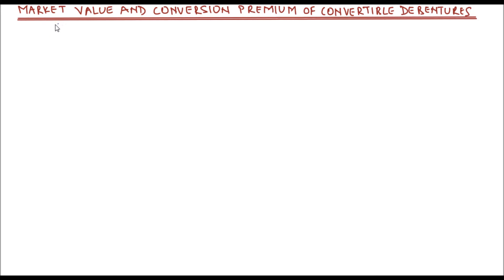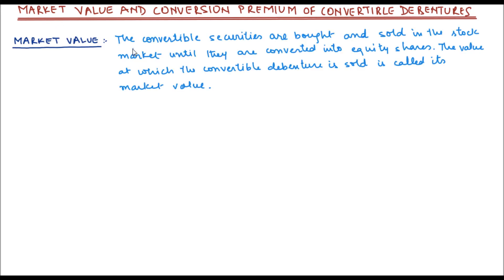So what is the market value of a convertible debenture? The convertible securities are bought and sold in the stock market until they are converted into equity shares. Even before the convertible debentures are converted into equity shares, they are sold and bought in the stock market. The value at which the convertible debenture is sold is called its market value. Similar to regular bonds, convertible debentures are also traded on the stock exchange, and the value at which they are traded is known as the market value.